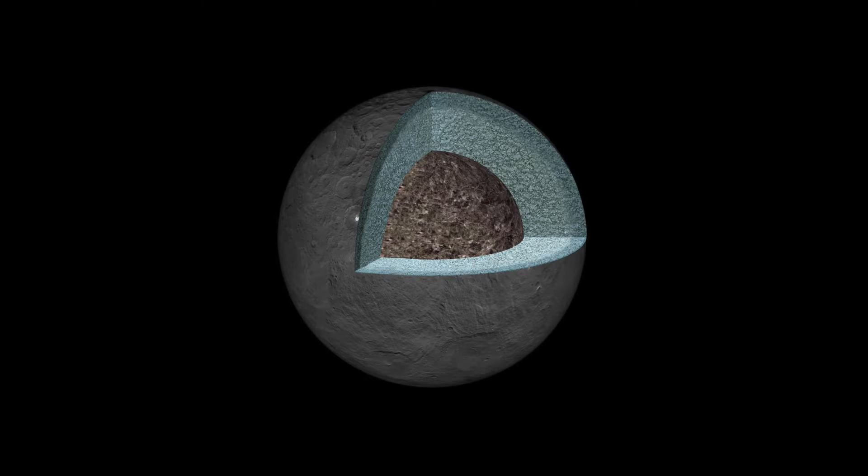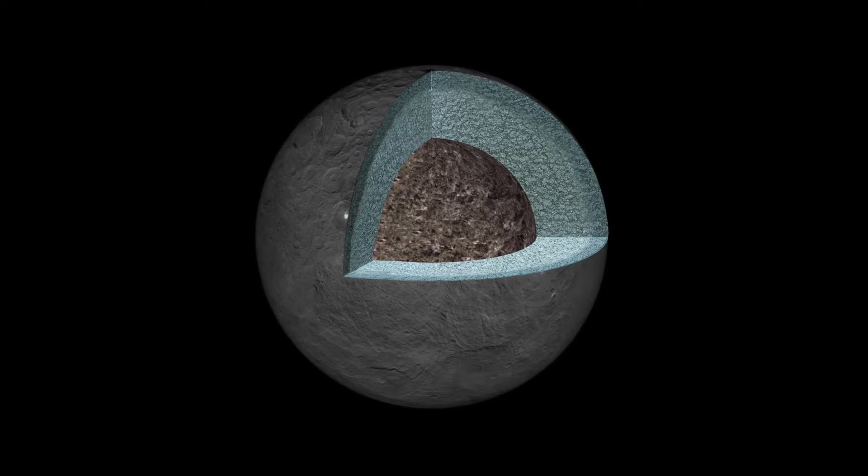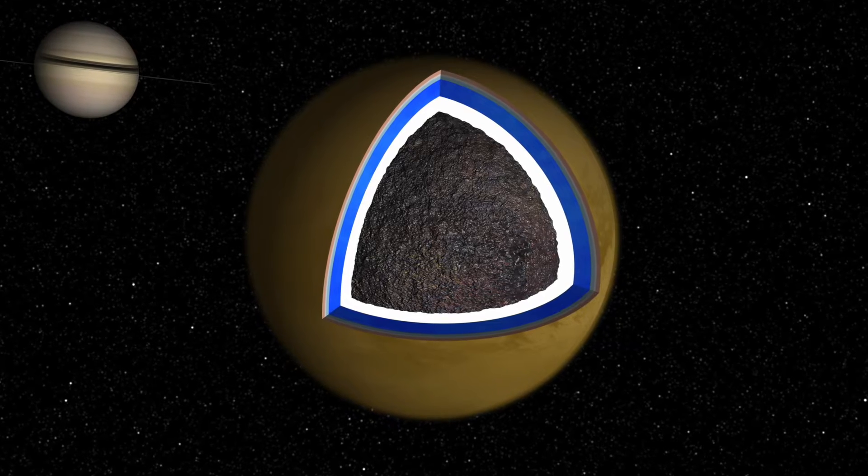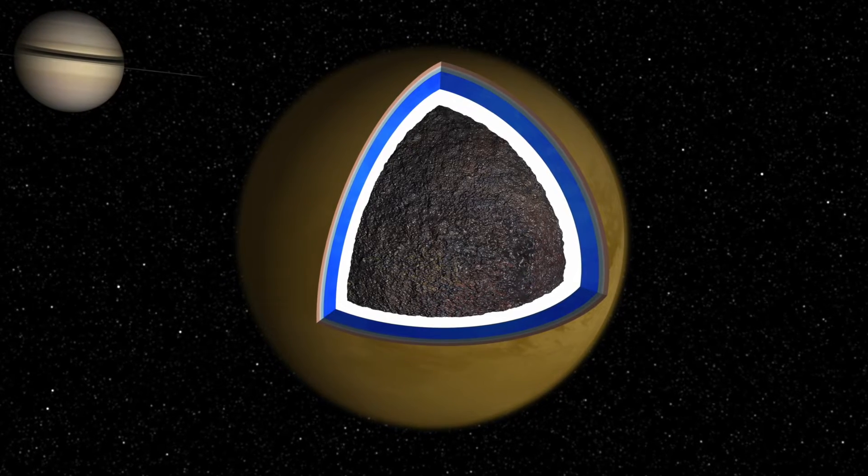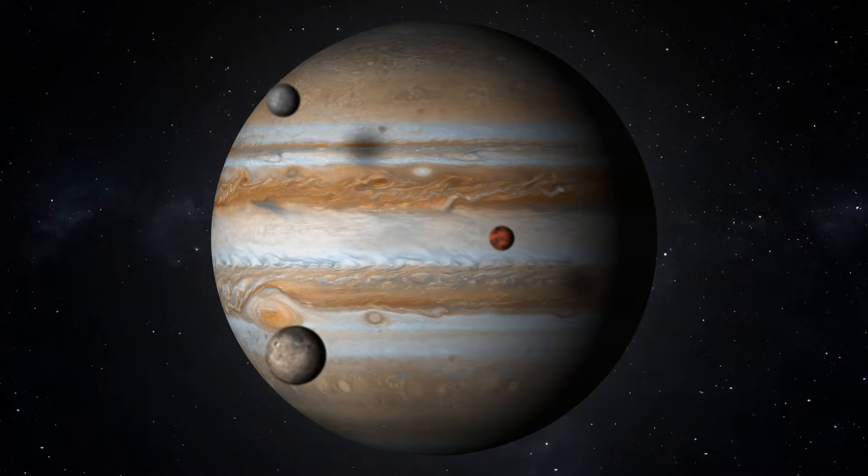Many ice moons are differentiated too. Those that are have an inner rocky layer surrounded by water. The rocky cores maintain some of their primordial heat. Plus a few of these worlds experience a very important source of energy hardly noticeable on Earth.